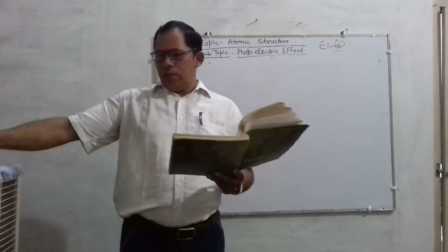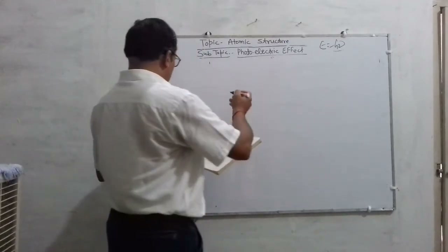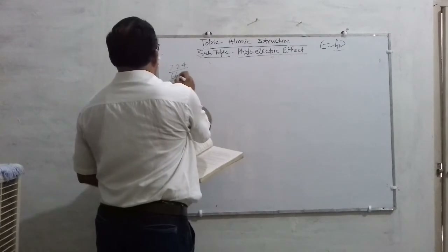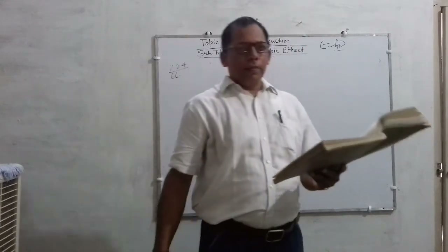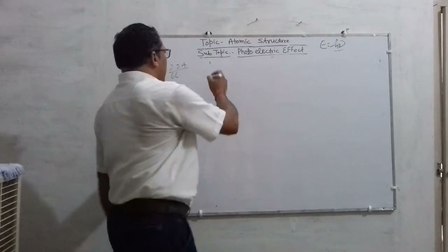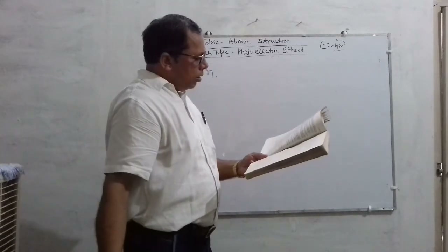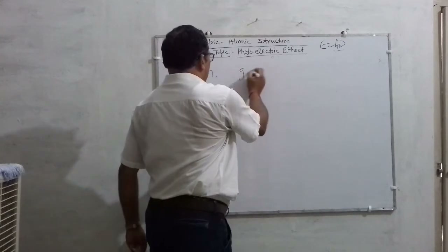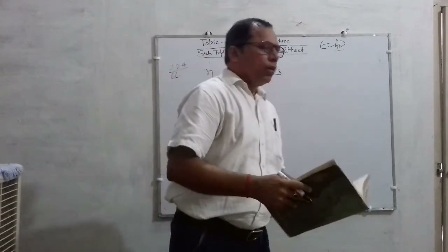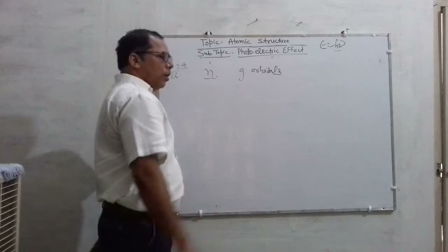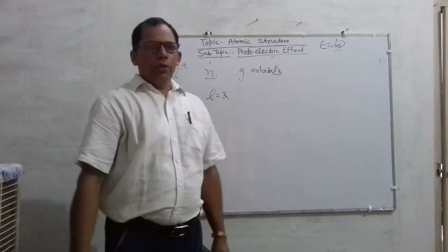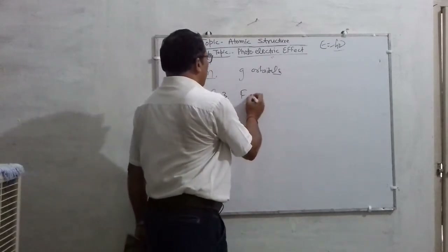Question number 2.24 at page number 66: What is the lowest value of N that allows G orbital to exist? As you are knowing, for L equal to 3, F orbital will exist. Summarizing: for L=0, S orbital; L=1, P orbital; L=2, D orbital; L=3, F orbital.